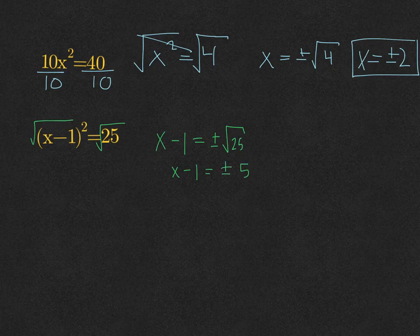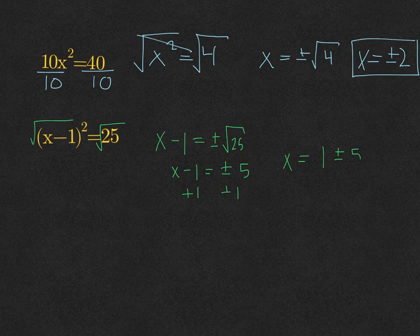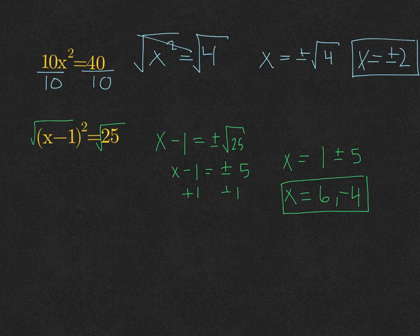Then I need to finish solving for x. Since it's being subtracted by 1, I'll add 1 to both sides. We end up with x equals 1 plus or minus 5. So 1 plus 5 is 6, and 1 minus 5 is negative 4. Those are our solutions.